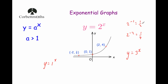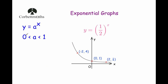What happens if we have y equals a to the power of x, but a is a number between 0 and 1 — so a 0-point number, or a fraction such as a half, a third, or four-fifths? Well, it would look something like this. If you had a half to the power of 0, that's 1, so it's going to cross the y-axis at 1. On the right-hand side, as x increases, it's going to get smaller and smaller — a half times a half is a quarter, a half times a half times a half is an eighth, and so on. The graph will approach the x-axis but never quite reach it.